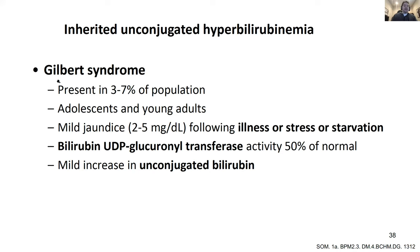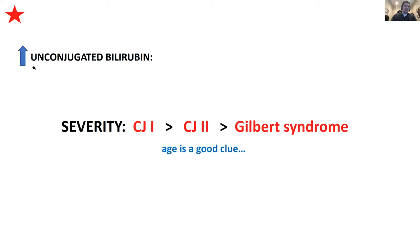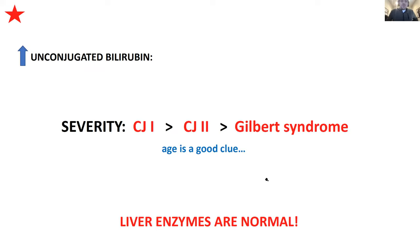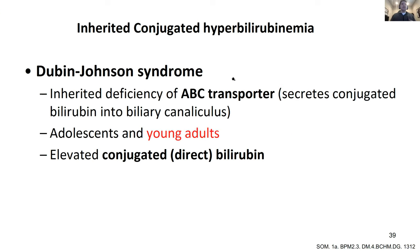Gilbert syndrome has about 50% enzyme activity - it may not show up until your teens or 20s. These three - Crigler-Najjar type 1, type 2, and Gilbert syndrome - all cause increased unconjugated bilirubin; age is a good clue. Type 1 is worse than type 2, which is worse than Gilbert. Key point: in these genetic problems, liver enzymes are normal. If you see all this unconjugated bilirubin but normal liver enzymes, that pushes you from a pre-hepatic or intrahepatic acquired cause to these genetic problems.